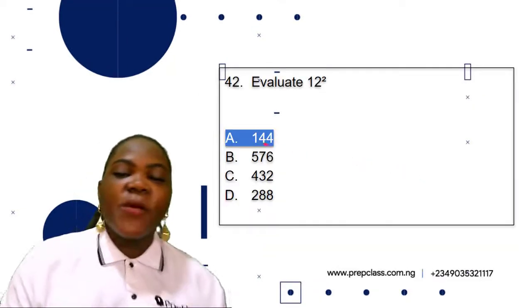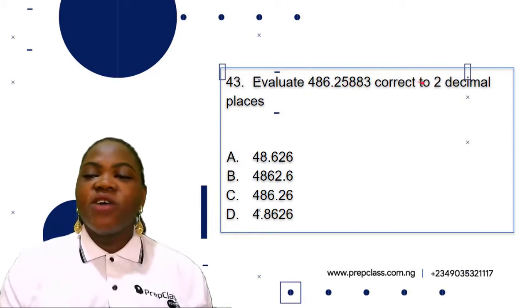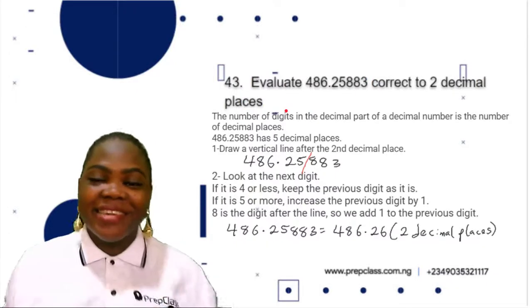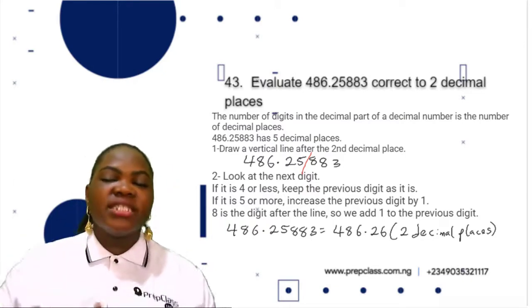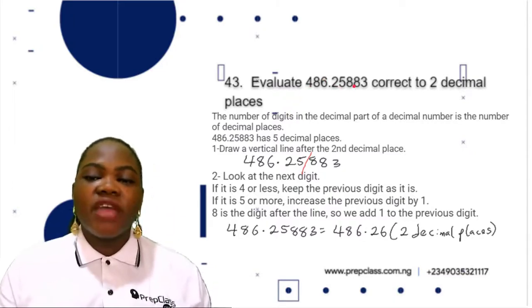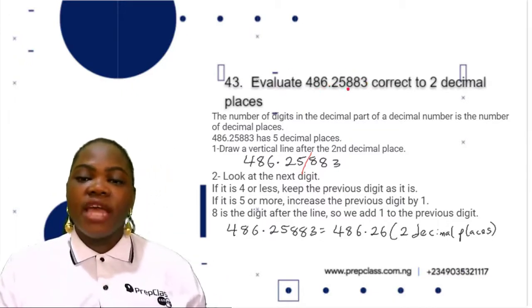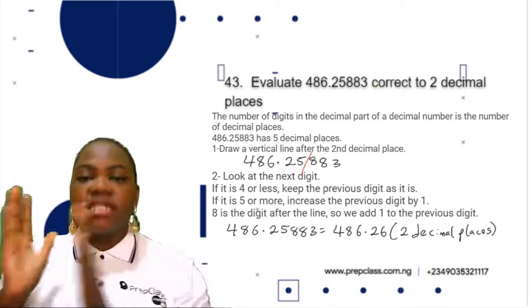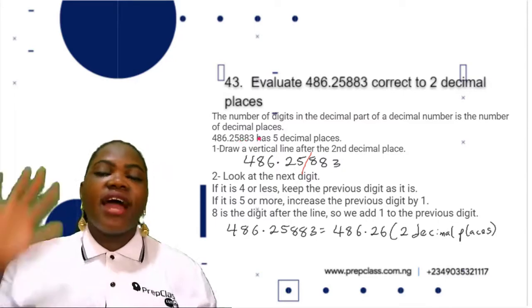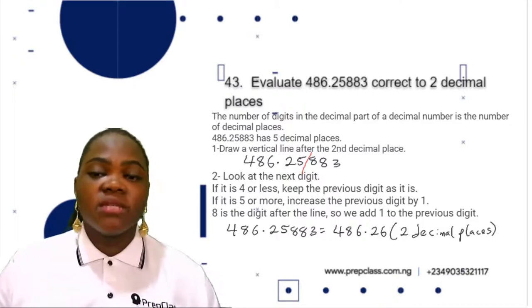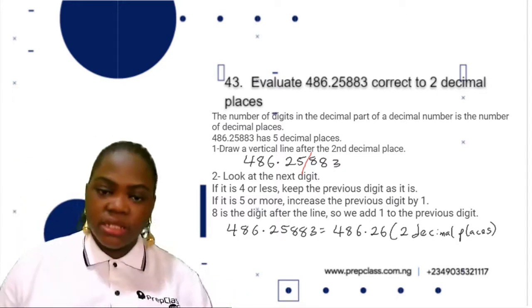Question 43: Evaluate 486.25883 correct to two decimal places. First, how do you know the number of decimal places? The number of decimal places is the number of digits in the decimal part. 486.25883 has five decimal places: 2, 5, 8, 8, 3. We are asked to correct to two decimal places. The first step is to draw a vertical line after the second decimal place. Then look at the next digit.